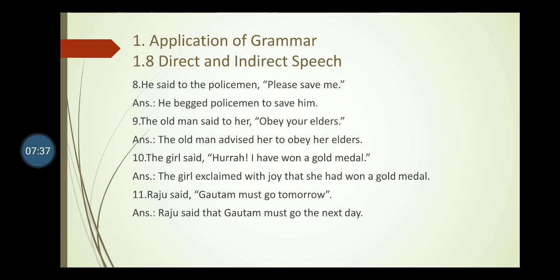Sentence eight: He said to the policeman, 'Please save me.' This is an imperative sentence with 'please', so it is a request. 'Said' changes to 'begged'. The conjunction 'to' is used. 'Me' changes to 'him'. Answer: He begged the policeman to save him. Sentence nine: The old man said to her, 'Obey your elders.' Answer: The old man advised her to obey her elders.